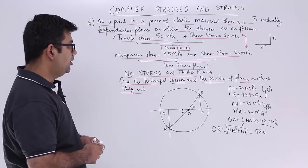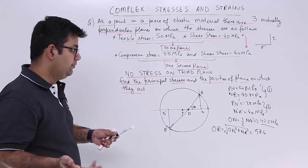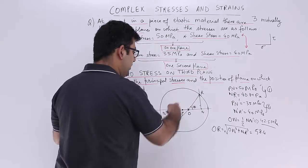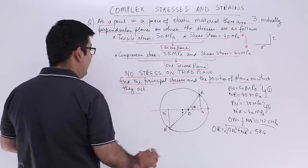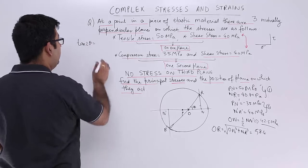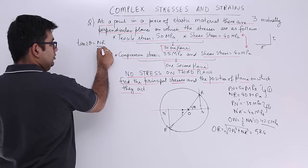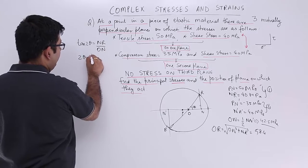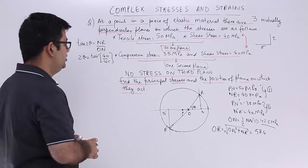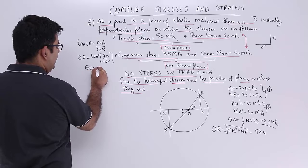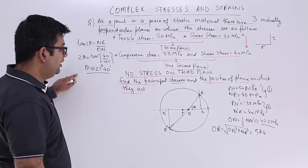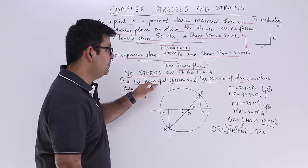Now with this coming into picture, I am still not finding out the principal stresses as of now. I can find out the position of the plane. The position of the plane can be found out by finding out this. So tan 2 theta. Tan 2 theta is equal to perpendicular upon base. So 2 theta would be equal to tan inverse 40 upon 42.5. So this would give you a value of theta as 21 degree 40 minutes.